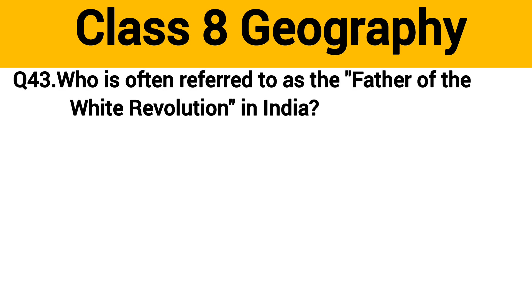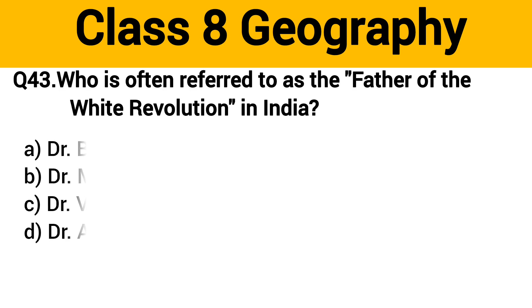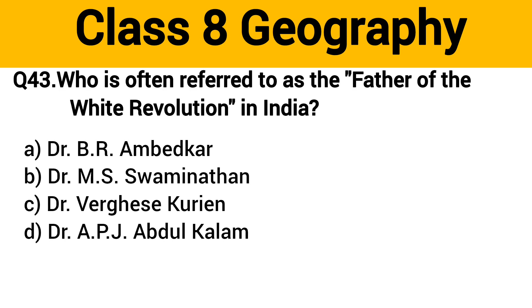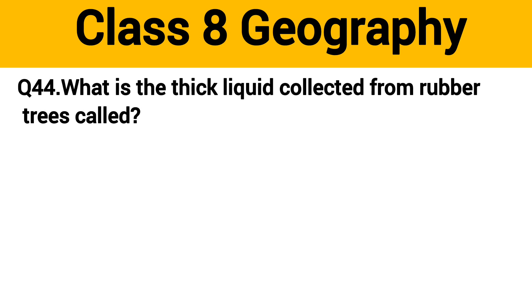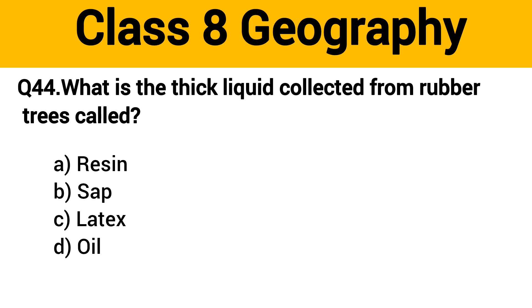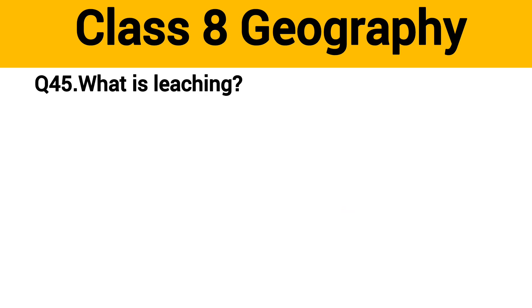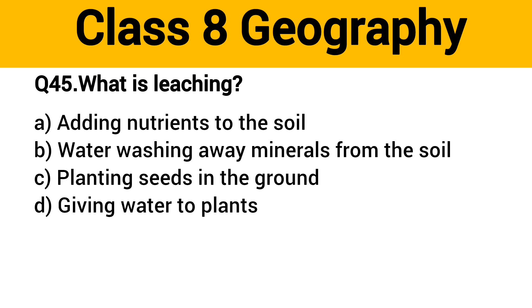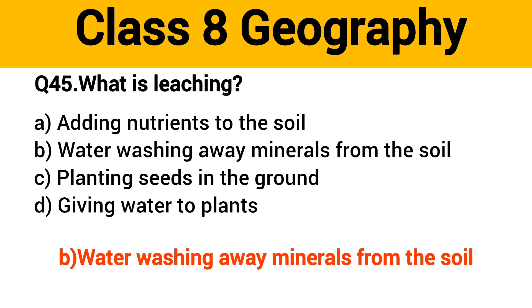Question number 43: Who is often referred to as the father of the White Revolution in India? The right answer is option C: Dr. Verghese Kurien. Question number 44: What is the thick liquid collected from rubber trees called? The right answer is option C: latex. Question number 45: What is leaching? The right answer is option B: water washing away minerals from the soil.